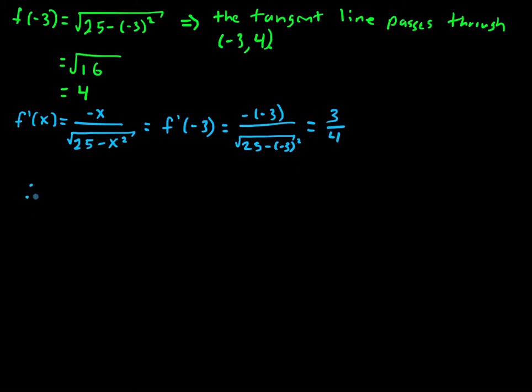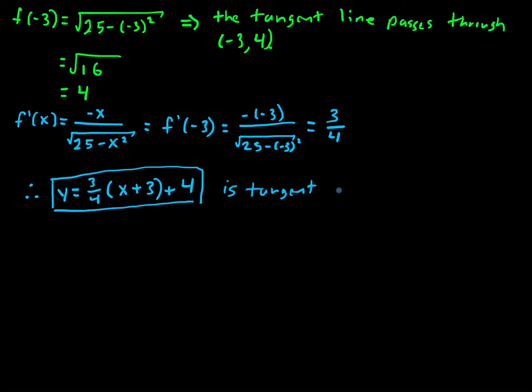And finally, therefore, y equals 3 over 4 x plus 3 is tangent to y equals the square root of 25 minus x squared when x is equal to negative 3.